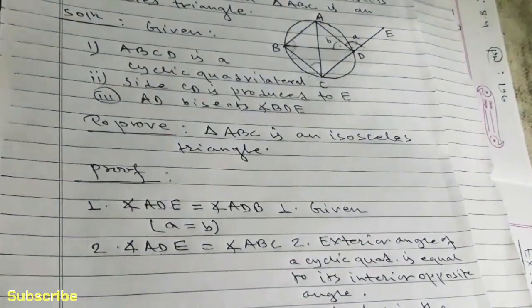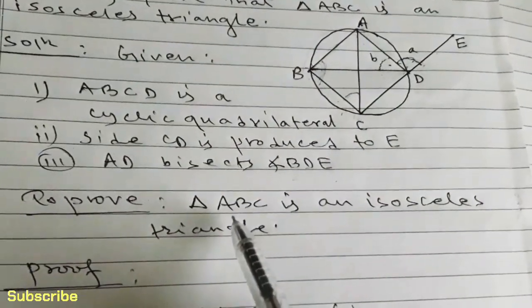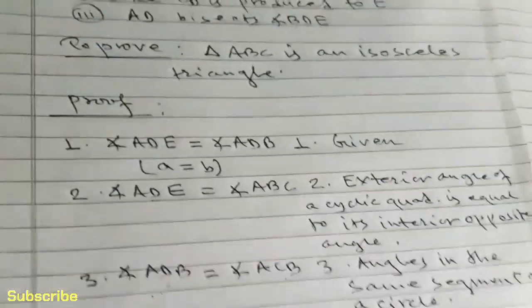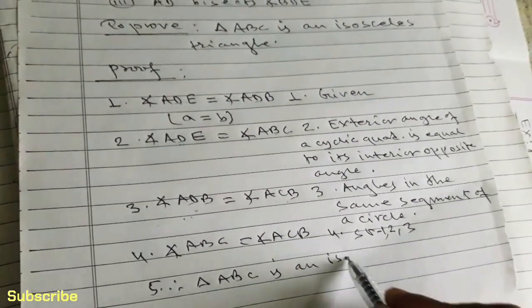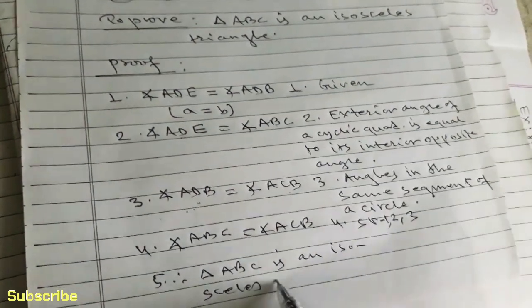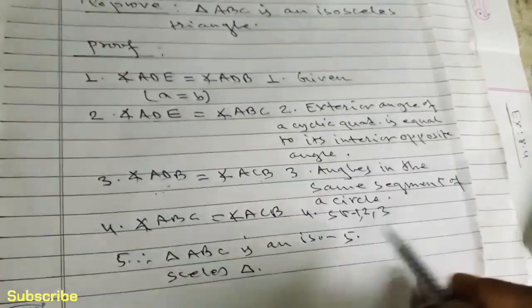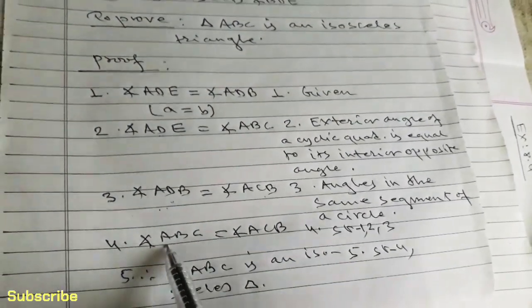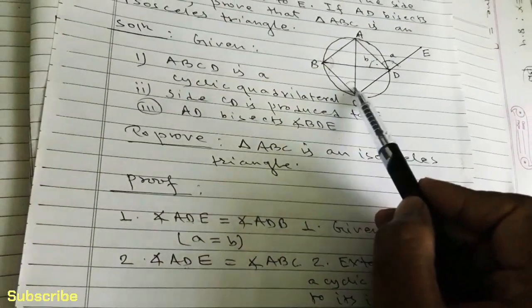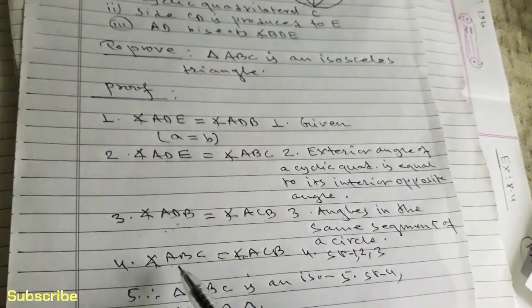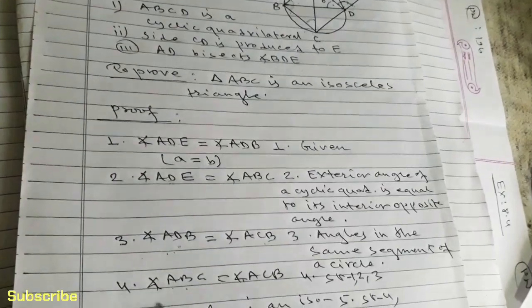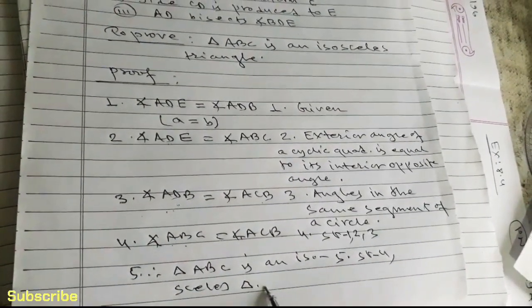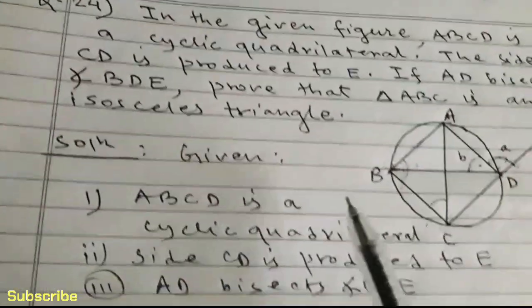Therefore, in statement number 5, triangle ABC is an isosceles triangle. The reason is from statement 4 — as two angles are equal. When two angles of a triangle are equal, the triangle is an isosceles triangle. So this completes the proof of the circle theorem question number 24.